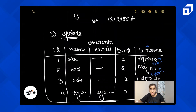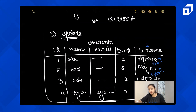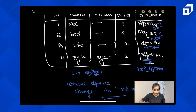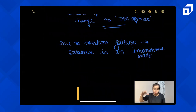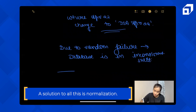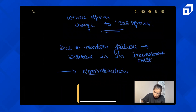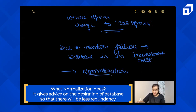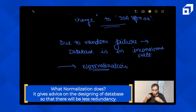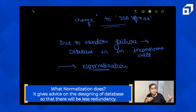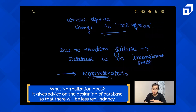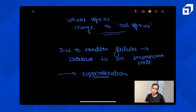So update anomaly, deletion anomaly, and insertion anomaly can all arise due to bad database design and repetitiveness of data. The solution to all of this is normalization. What normalization does is give you guidelines on how to design your database so there will be less redundancy and fewer random anomalies.